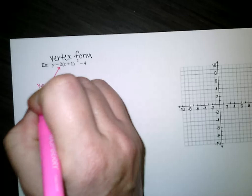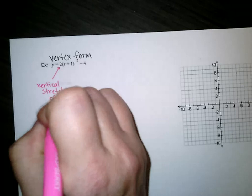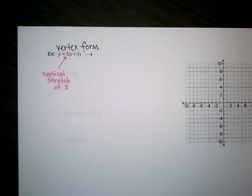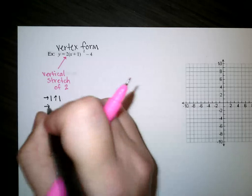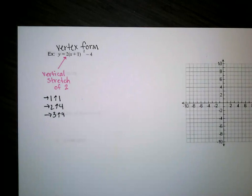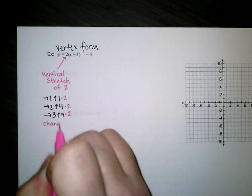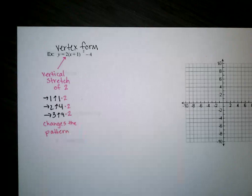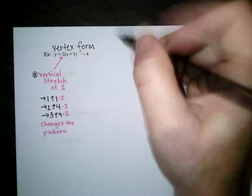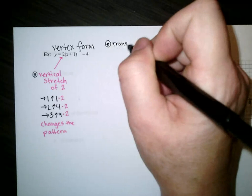That vertical stretch is going to change the pattern when I graph. So instead of going over 1, up 1; over 2, up 4 — it is going to go over 1, up a stretched amount. We have to stretch each of the ups by multiplying them by 2. So a vertical stretch changes the pattern. That is our first transformation: vertical stretch of 2.